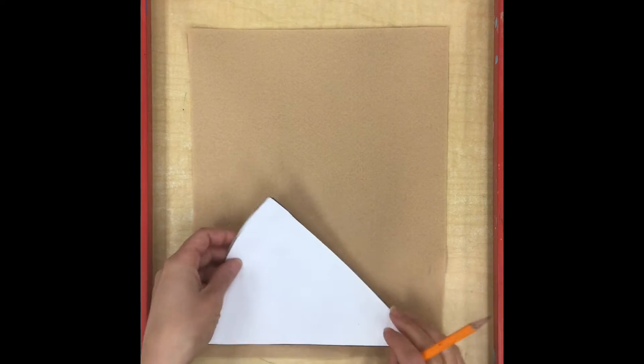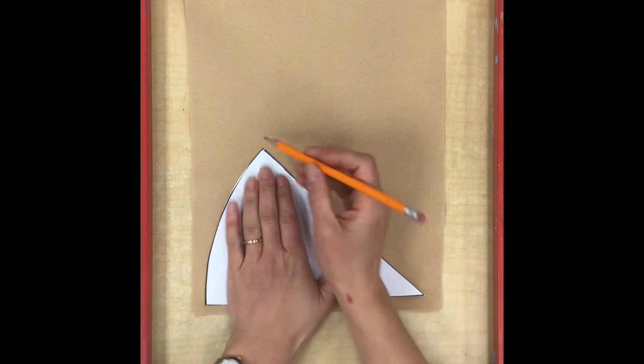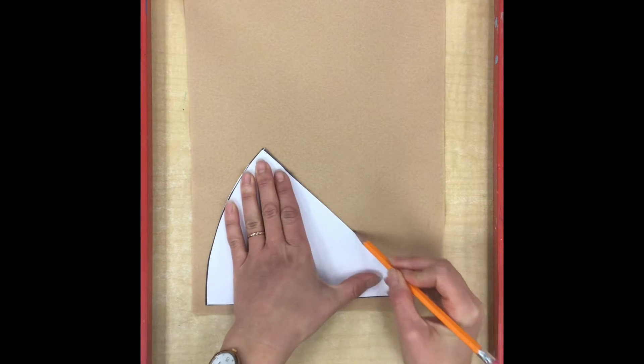So I'm going to scoot one way over close to the edge and I'm going to hold it down with one hand and use my pencil to trace around the shape with the other.